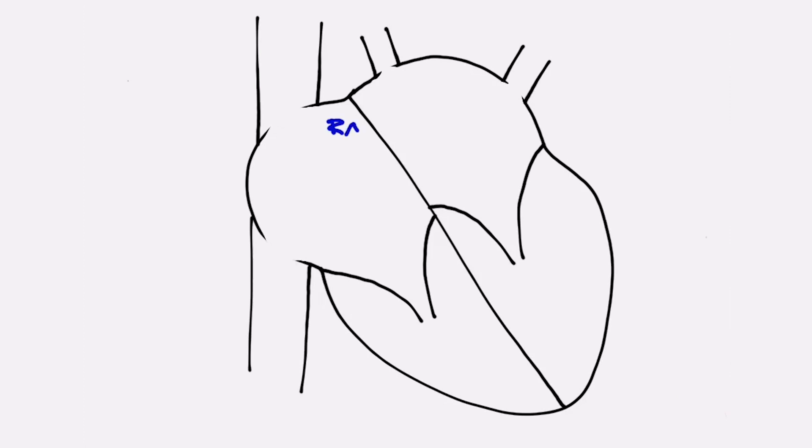But before we do that, let's talk about how the normal heart works. The normal heart has four chambers and four valves. The top chambers are called atria, right atrium on the right, left atrium on the left. The bottom chambers are called ventricles, right ventricle on the right, left ventricle on the left.